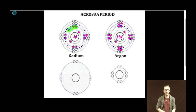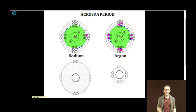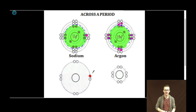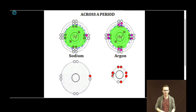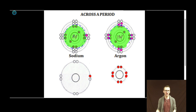Once again, I'm going to highlight their cores to make this easier. Now let's create their CVR model. Sodium is going to have just a single valence electron. Argon, however, has eight valence electrons. Now let's come up with the core charge. Sodium has 11 positive protons and 10 inner level electrons — 11 positive charges, 10 negative charges — so a plus one core charge.